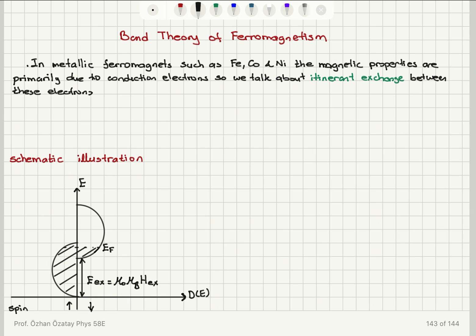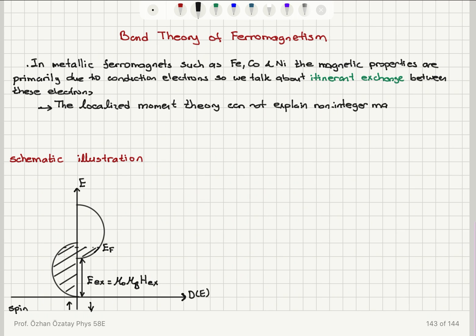The thing that the localized moment theory cannot explain is the fact that when we measure the magnetic moment per atom, we find that it is a non-integer quantity. So the purely localized moment picture cannot explain this phenomenon — the localized moment theory cannot explain non-integer magnetic moment.